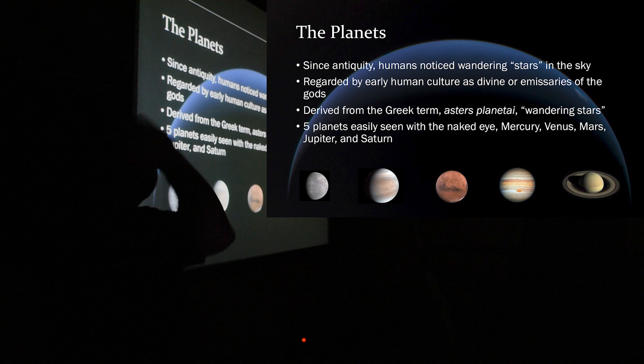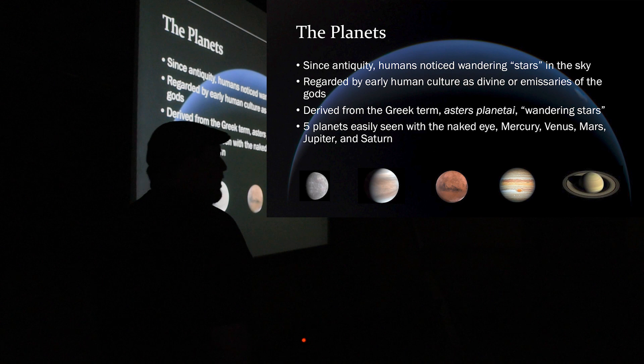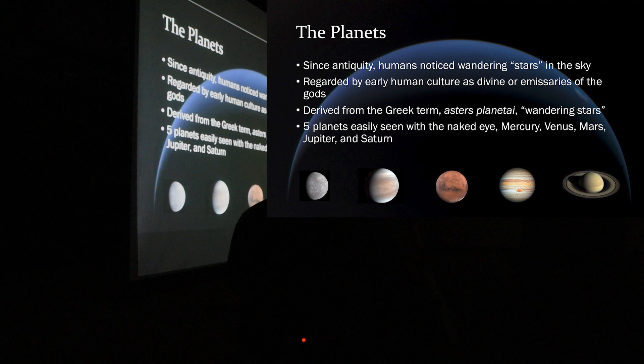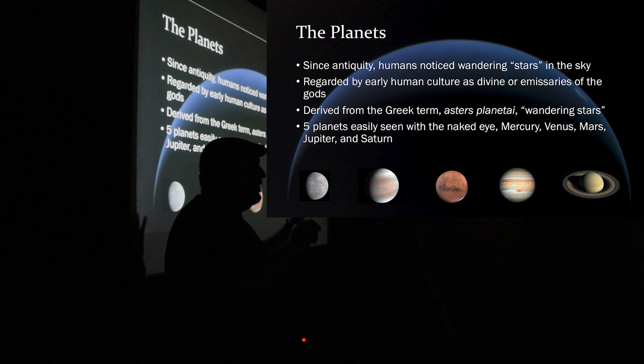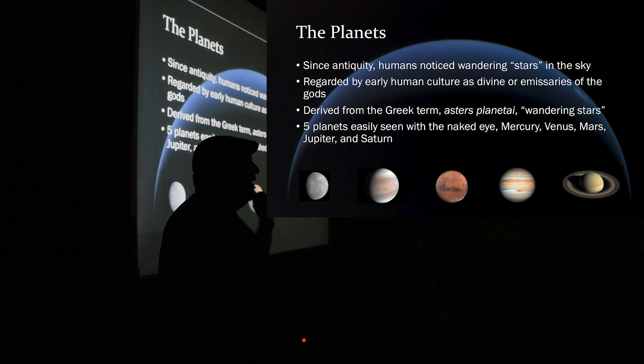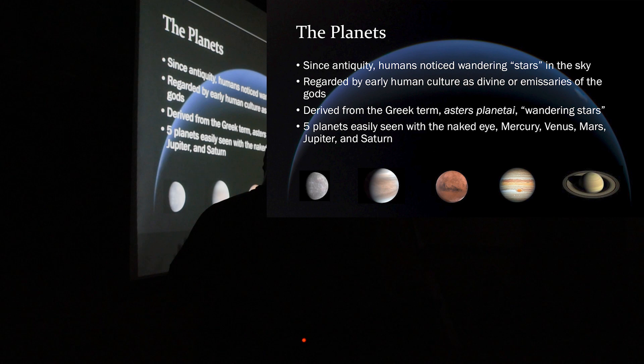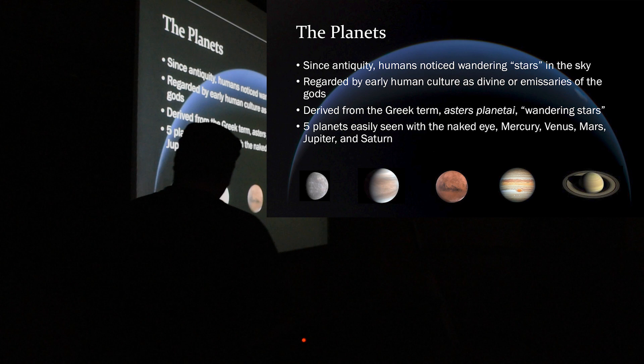All right, so we all know about the planets. So, since a long time ago, humans, when they looked up in the sky, they noticed that not all the stars are staying in place. They wander around in the sky. So, we've known about five planets that you can see with the naked eye. And that, of course, is Mercury, Venus, Mars, Jupiter, and Saturn.